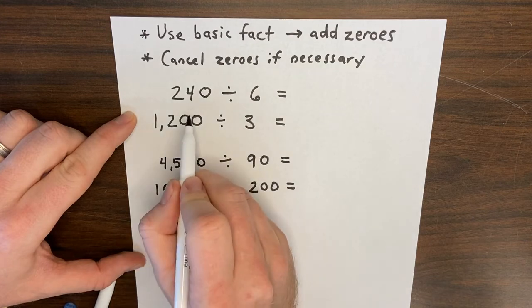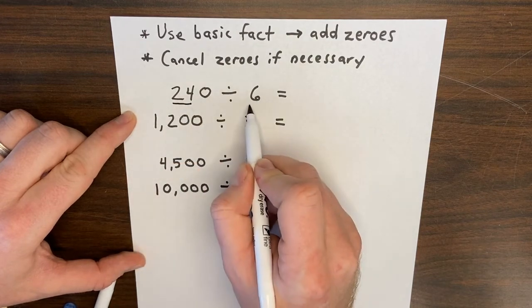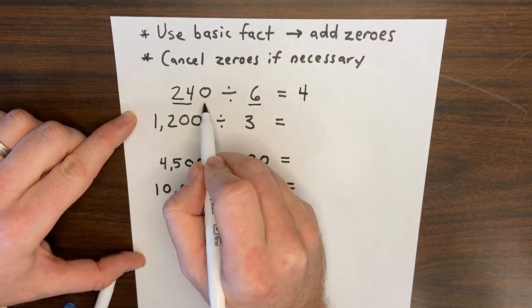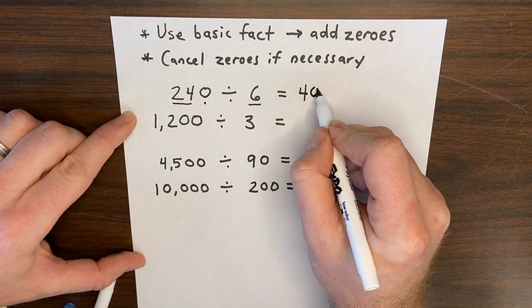So let's look at the two scenarios. Here we have 240 divided by 6. The basic fact is 24 divided by 6, which is 4. I take a look, there's one zero, so I add one zero to my quotient.